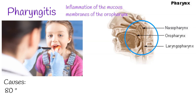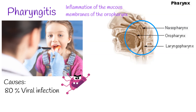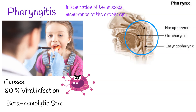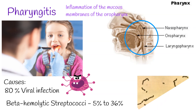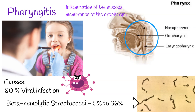Almost 80% of pharyngitis is caused by viral infection. These viruses are predominantly rhinovirus, influenza, adenovirus, coronavirus, and parainfluenza. The most common bacterial infection is group A beta-hemolytic streptococci, which causes 5% to 36% of cases of acute pharyngitis.